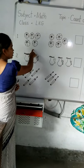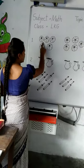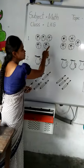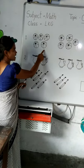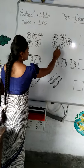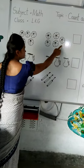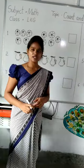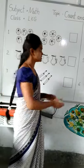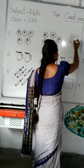First picture. Now let's start the counting. 1, 2, 3, 4, 5, 6, 7, 8, 9, 10. How many objects are there? There are 10. We can write it here in the box. 10.